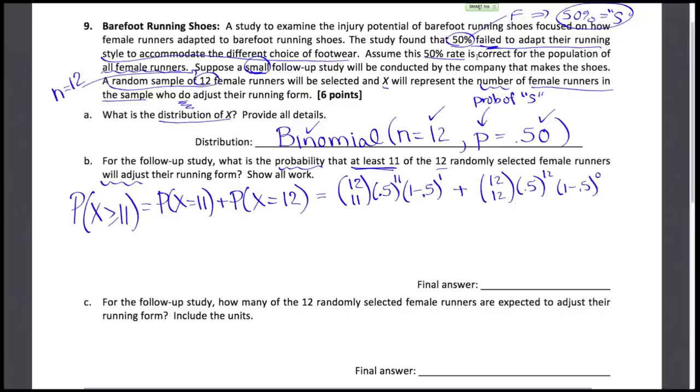Some of these are pretty easy to find. 12 choose 12 - how many ways to pick all 12 out of 12? There's only one way, you just pick them all. And 12 choose 11 is also pretty easy because you're picking the one person you're leaving back, and there's 12 choices for that. Then it's just a matter of getting our calculator out to work out this probability. Our final answer should be 0.0032 once we work out the multiplying and adding. And it's not very likely. If only about half really do adjust the running form, seeing 11 or 12 doing so is not a very likely outcome, kind of unusual.